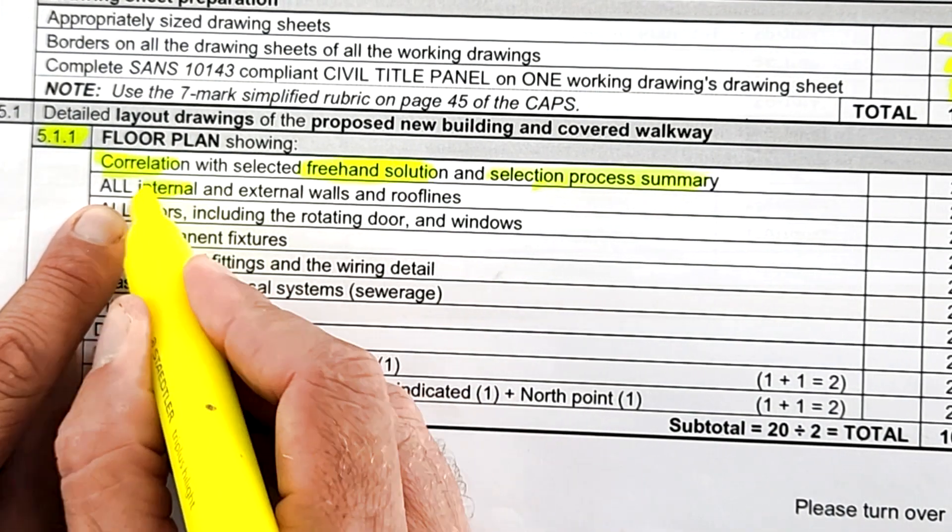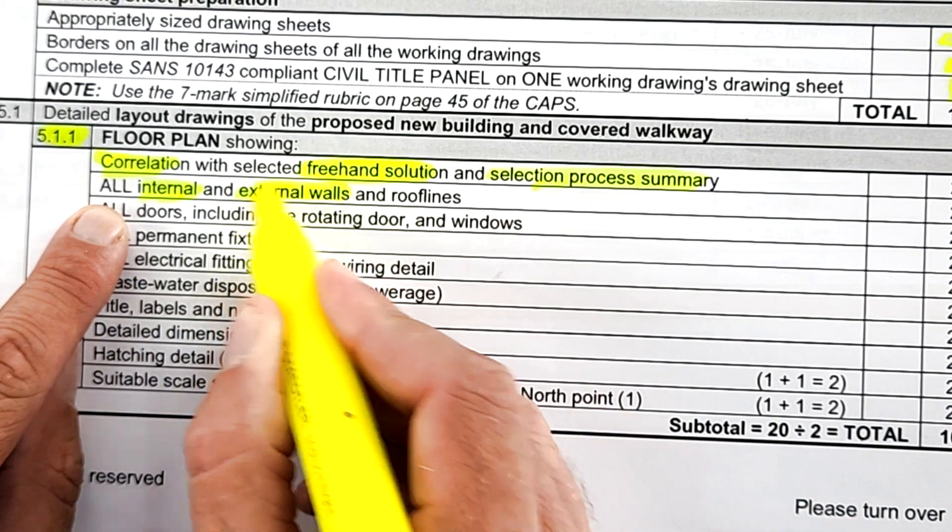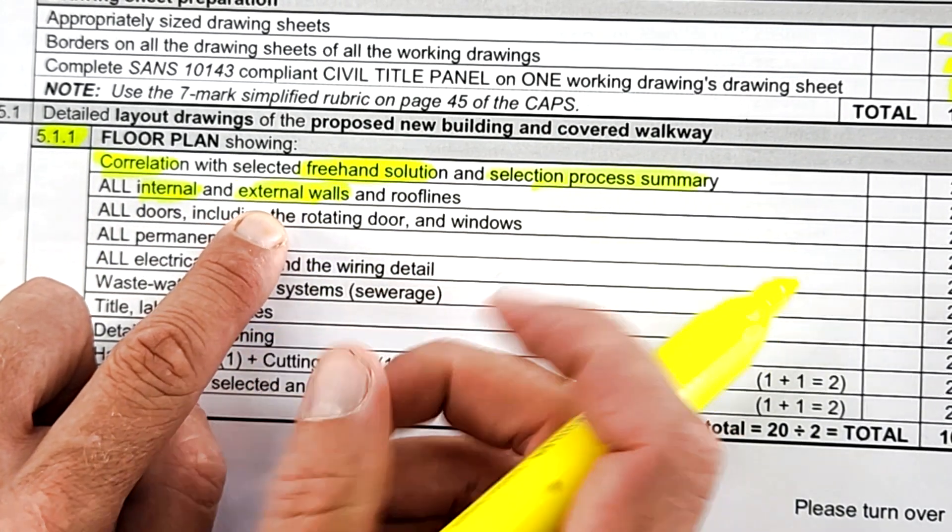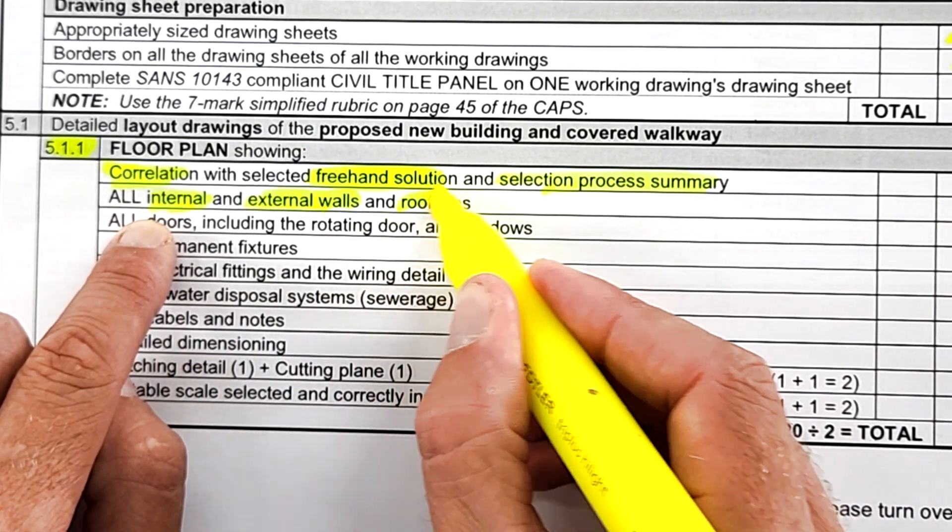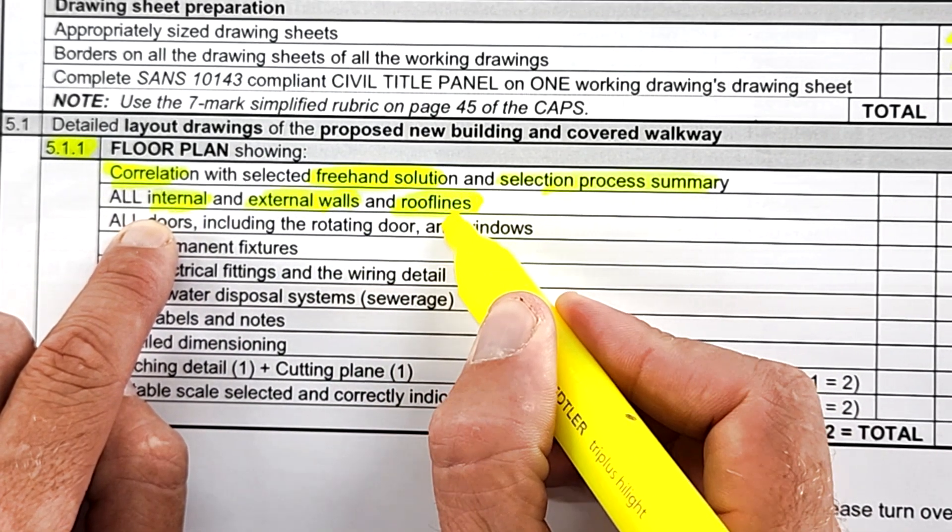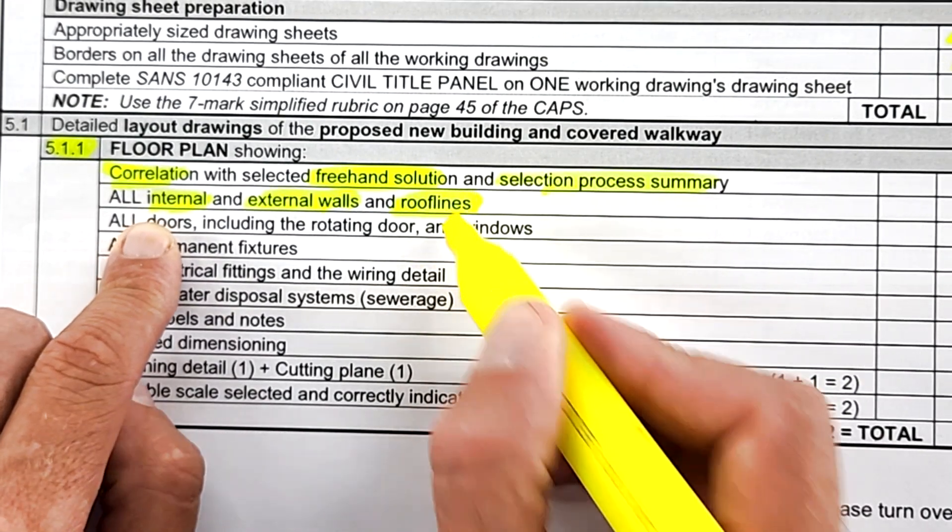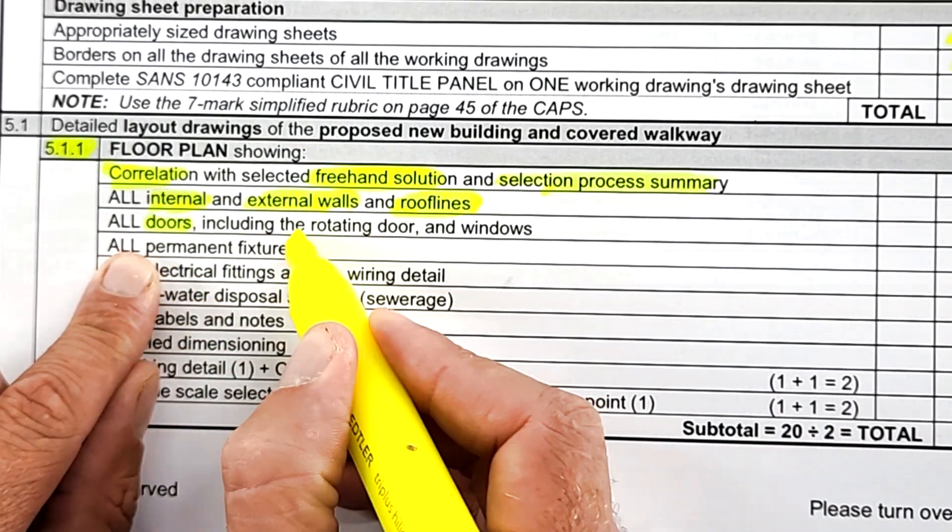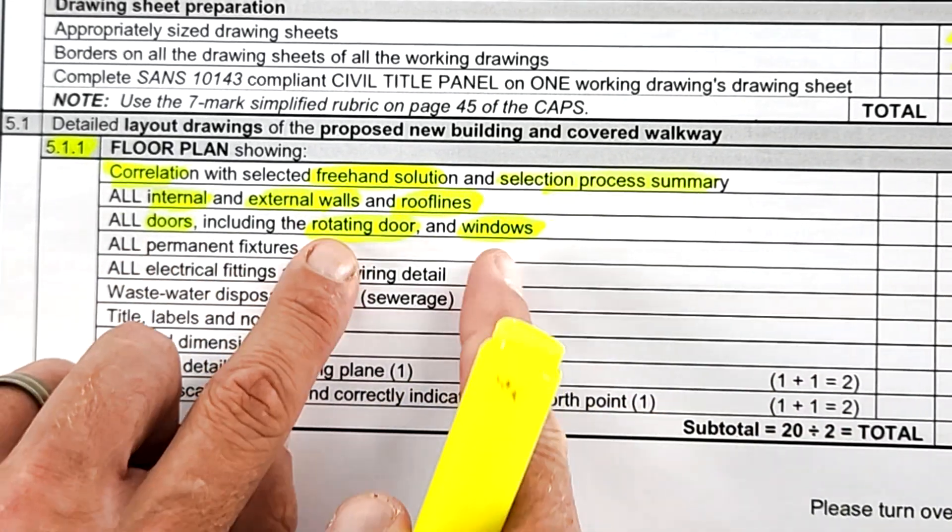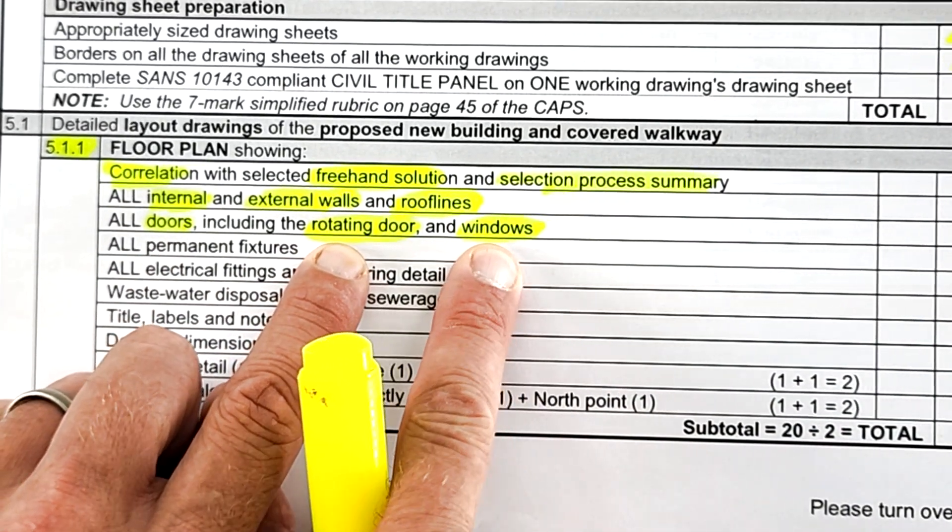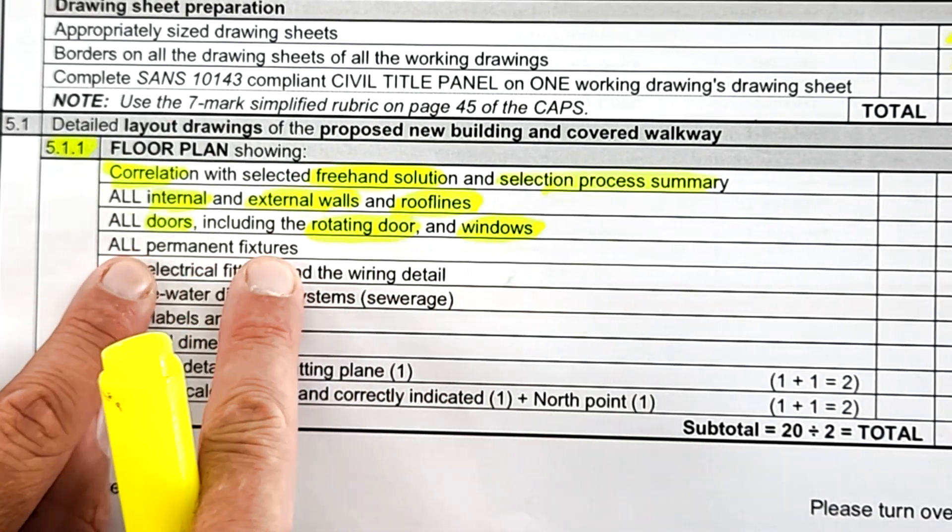Do you show on this floor plan all the internal and external walls? There's going to be a difference in the thickness of the walls because some will be external, others internal. Do you show all your roof lines? I'll actually show you how this looks for a Dutch gable roof. All doors, including the rotating door, have you shown that and the windows? All permanent fixtures.